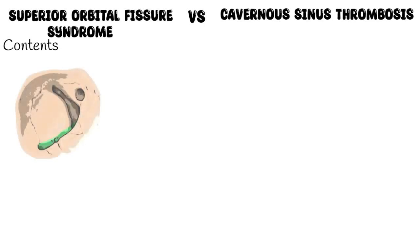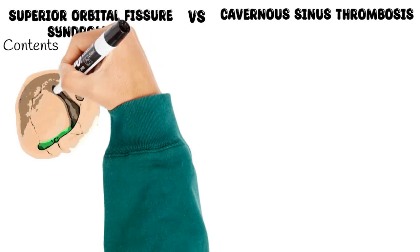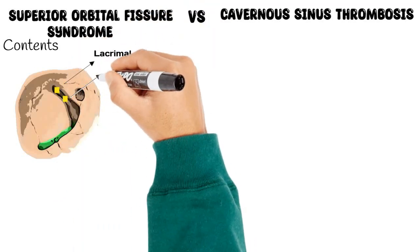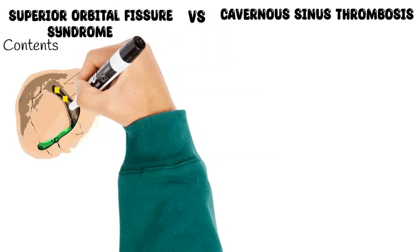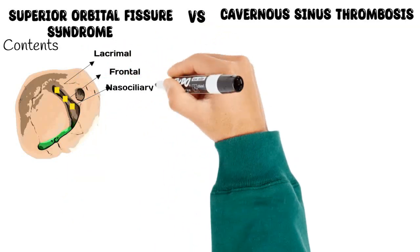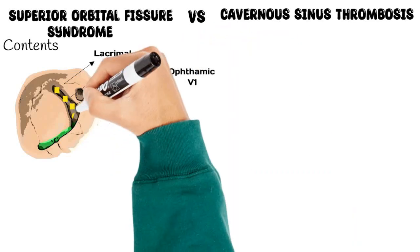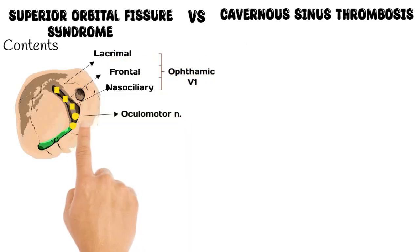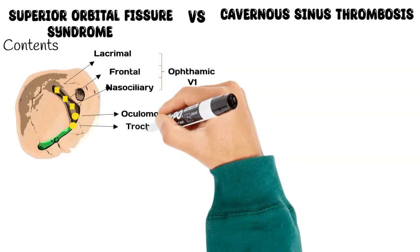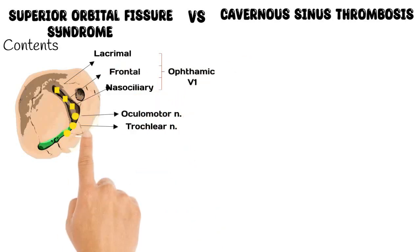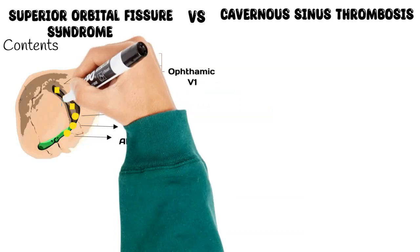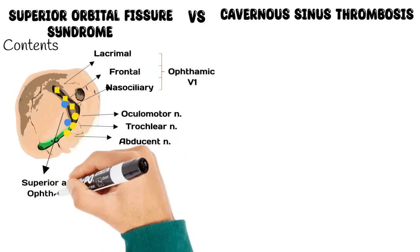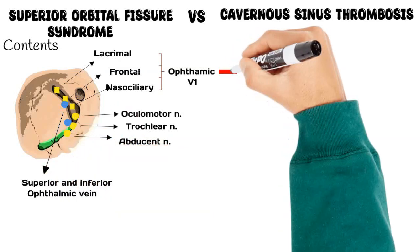The structures passing through the superior orbital fissure include the lacrimal nerve, the frontal nerve, and the nasociliary nerve. These are divisions of the ophthalmic nerve, which is the first division of the trigeminal nerve. Also passing through are the oculomotor nerve, the trochlear nerve, and the abducent nerve, which move the eye in various directions.